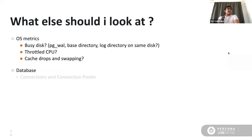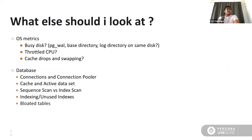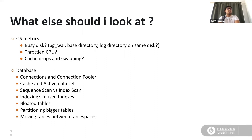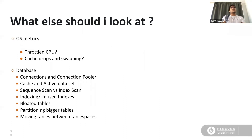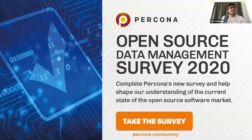You could also look at OS metrics, connections, and connection pooler activity to tune your database, moving tables between different tablespaces to distribute I/O, table partitioning, and indexing. Make sure that you are tuning your database using most of the configuration parameters we discussed in these slides. Please do not forget to take the survey, because we would love to know the state of the open source software market.